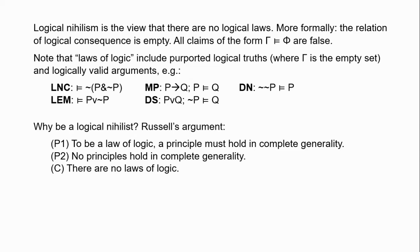There are some cases, for example, where the law of non-contradiction fails to hold — where there are some true contradictions. There are some cases where modus ponens fails to preserve truth, where an argument with the form of modus ponens has true premises but a false conclusion.